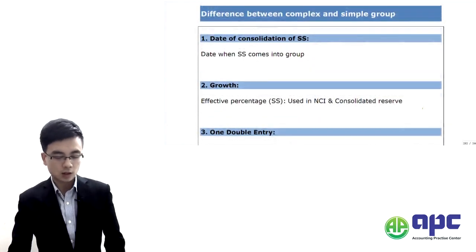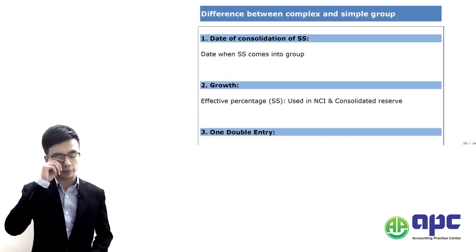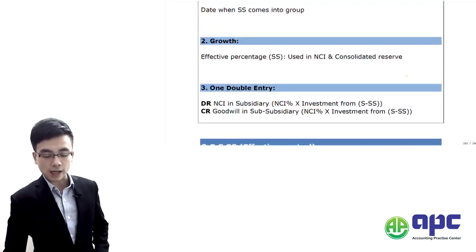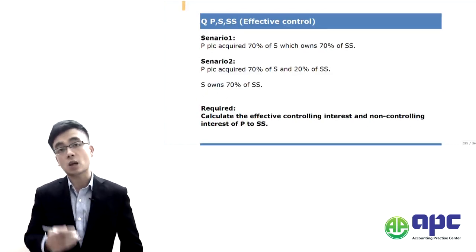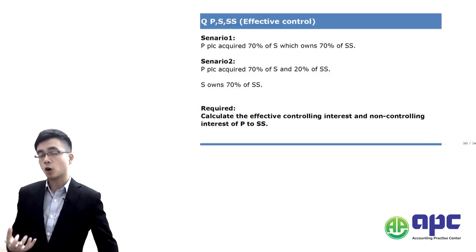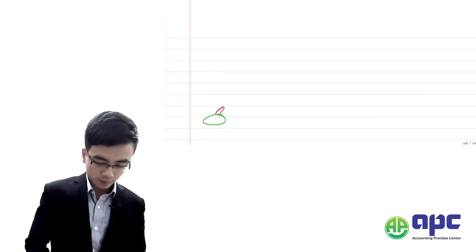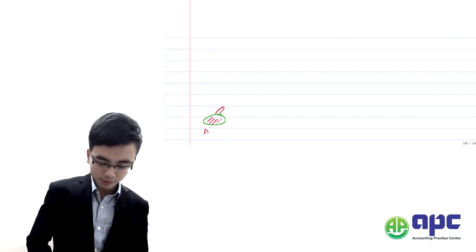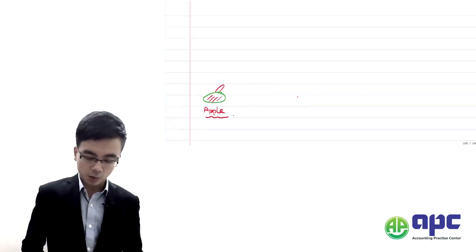We know there will be two additional accounting treatments needed for the complex group on top of the basic one. Let's first look at something called effective control — to see why, from the parent company's perspective, we have control over the sub-subsidiary. Before we move further, let's do a little exercise.